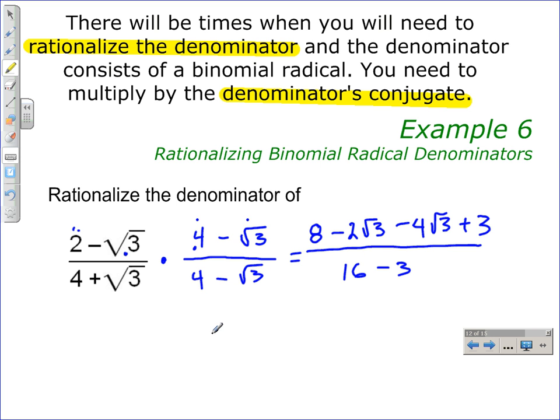We collect like terms in our numerator and simplify the denominator. The like terms in the numerator, the first pair is 8 plus 3, which gives 11. The other pair is minus 2 square root of 3 minus 4 square root of 3, which gives minus 6 square roots of 3.